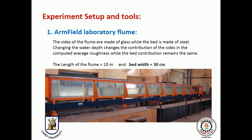The experiment setup and tools. Number 1: the Armfield laboratory flume. The sides of the flume are made of glass while the bed is made of steel. Changing the water depth changes the contribution of the sides to the computed average roughness, while the bed contribution remains the same. The length of the flume is 10 meters and the bed width is 30 centimeters, which will be of great importance in calculations.